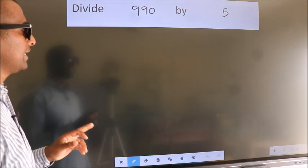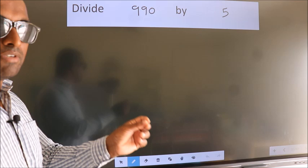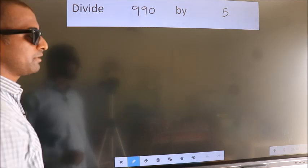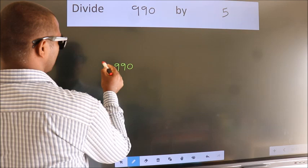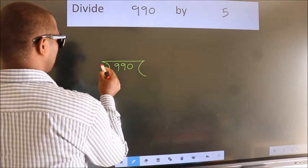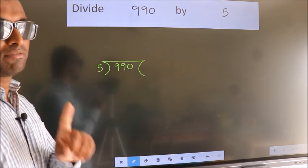Divide 990 by 5. To do this division, we should frame it in this way. 990 here, 5 here. This is your step 1.